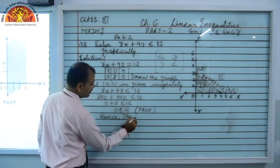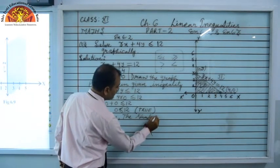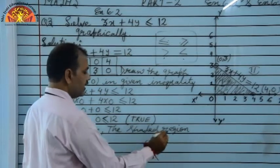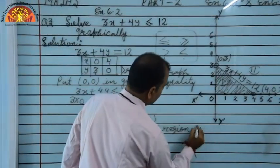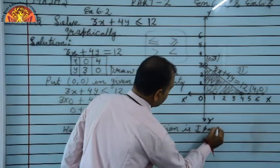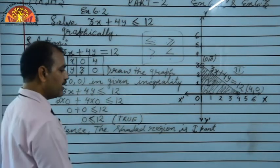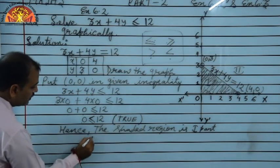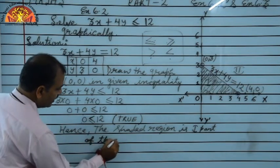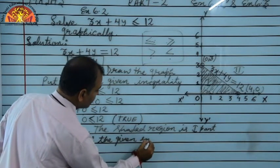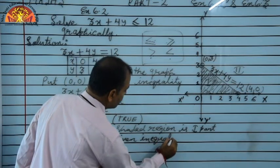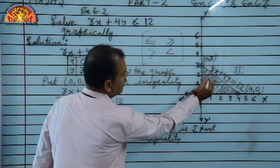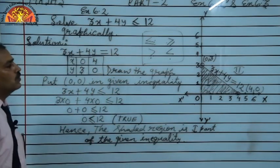The shaded region is the first part of the given inequality. The shaded region is our solution region. So the shaded region is the solution of the inequality.